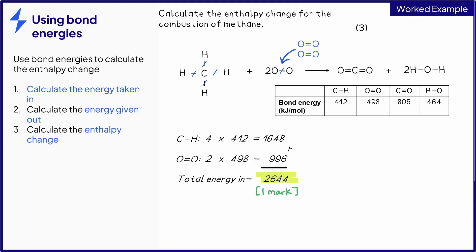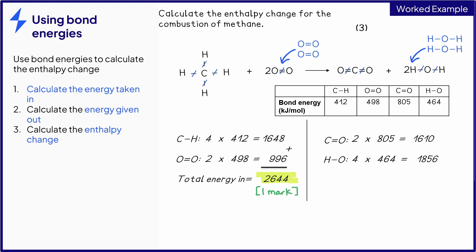Achieving this number will give you one mark. Then do the same for the other side. The bonds present are a carbon-oxygen double bond and a hydrogen-oxygen single bond. There are two carbon-oxygen double bonds, which we can cross off here, and multiply this number by the bond energy in the table. Similar to the oxygen, there are also two molecules of water. Some students find it helpful to draw out the molecules fully so that they can see the total number of bonds. As we can see here, there are four bonds in total.